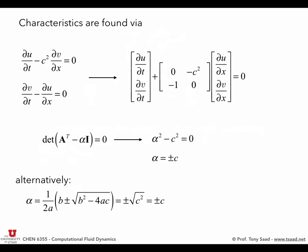Writing in matrix form, we get the coefficient matrix A. Finding the eigenvalues from det(A^T - alpha·I) = 0 gives alpha² - c² = 0, so alpha = dx/dt = ±c. At every point we have two characteristics: one with slope 1/c and one with slope -1/c in the t-x plane. Every point splits and propagates in two directions.